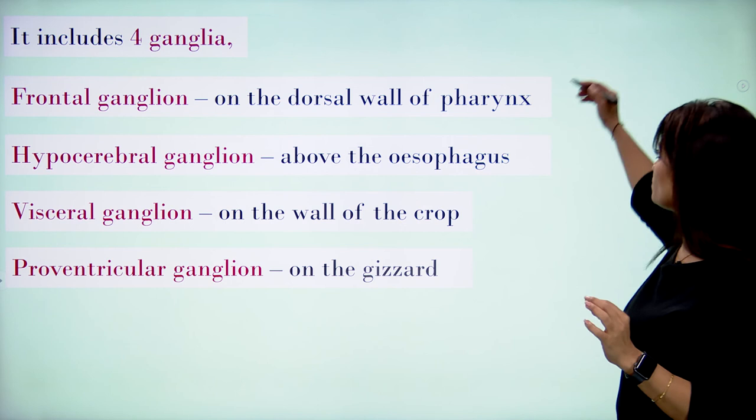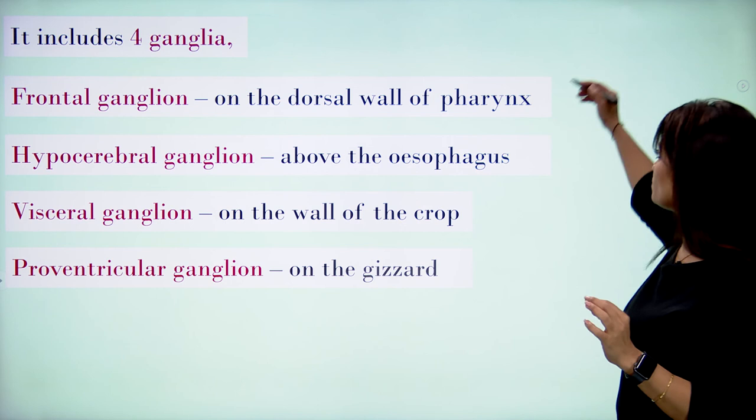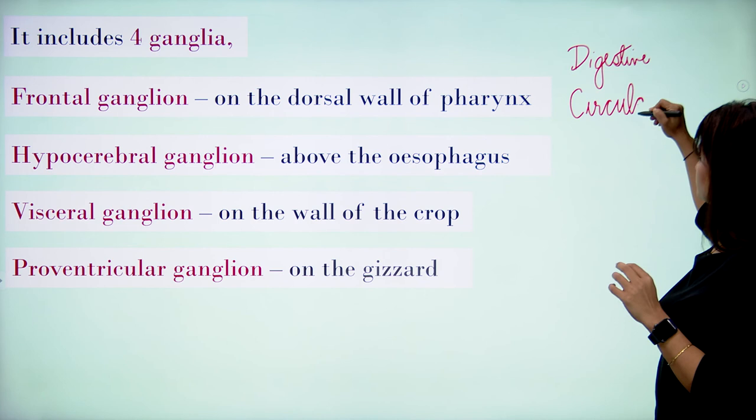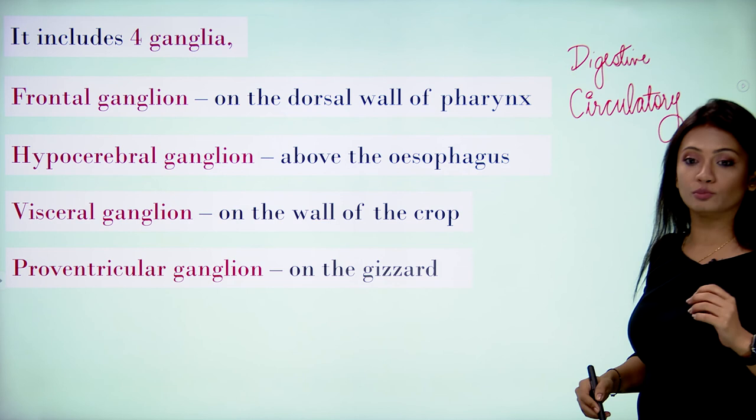The autonomic nervous system supplies two main parts: first the digestive system and second the circulatory system of the cockroach. Both are taken care of by this autonomic nervous system.